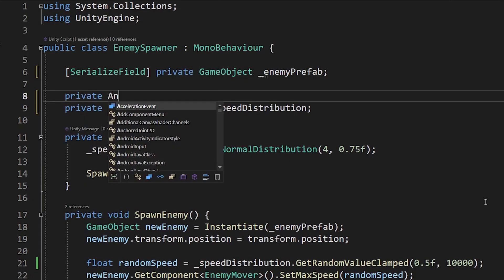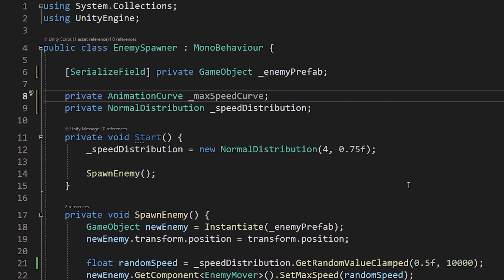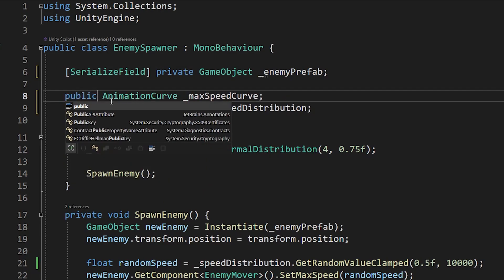So, step one is to make an animation curve. So, in your script, type private animation curve max speed curve. Next, make sure you mark it with the serialized field attribute, so it shows up in the inspector. You could also just mark it as public if it's easier for you to understand.